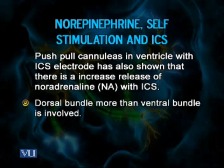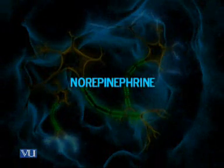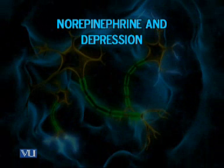Particularly the dorsal bundle — more than the ventral bundle — is involved in ICS reward. The dorsal bundle projects into the cortices and limbic areas, meaning the reward feeling arises from higher-level cortical functioning as well as emotional states.